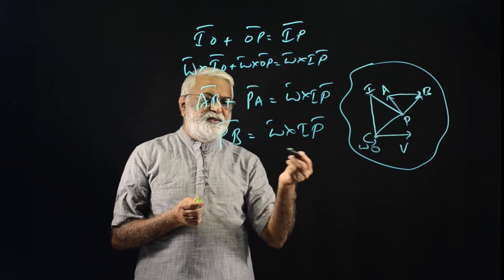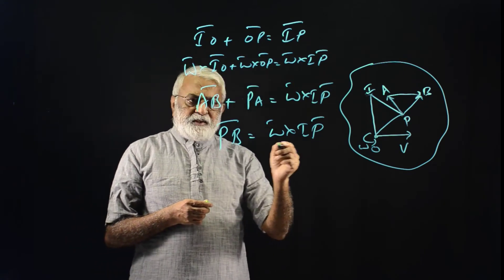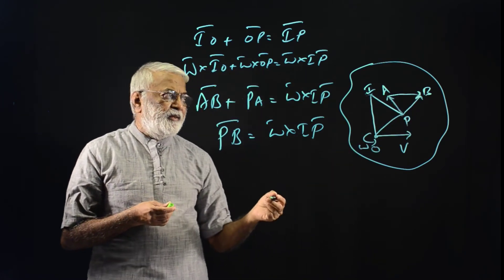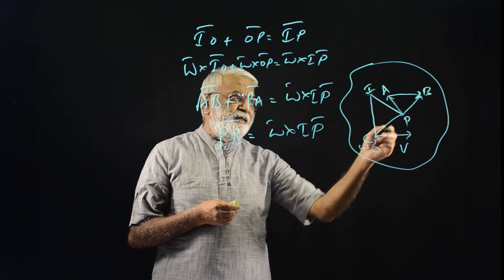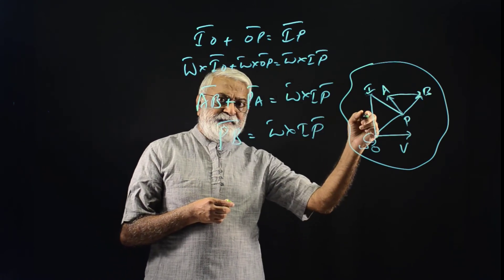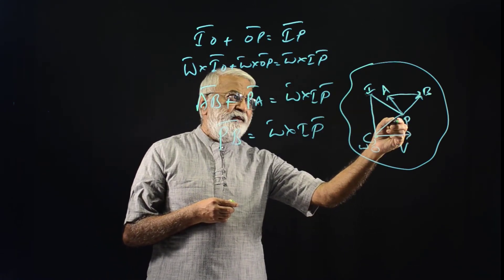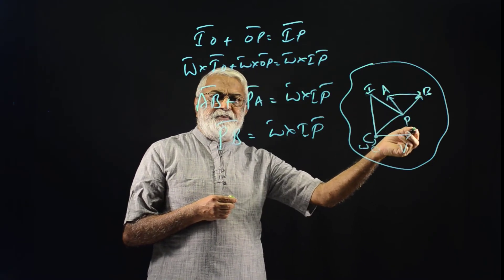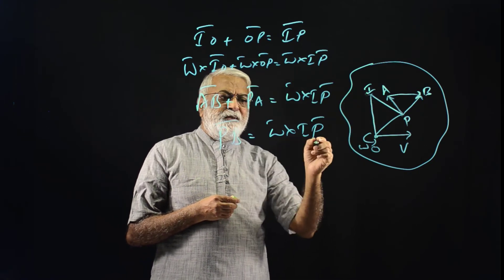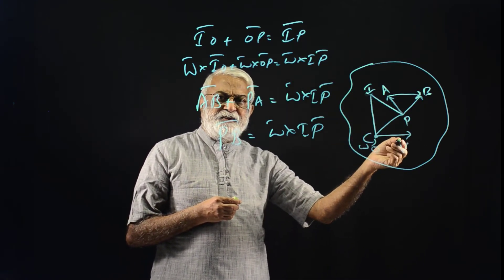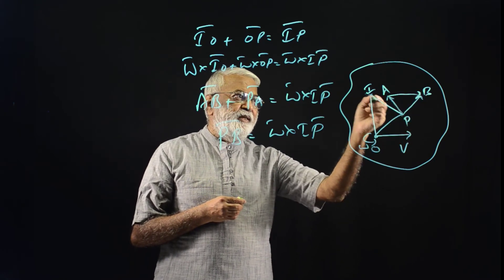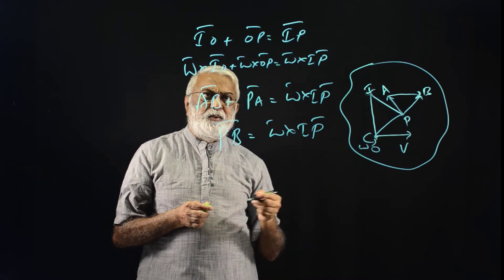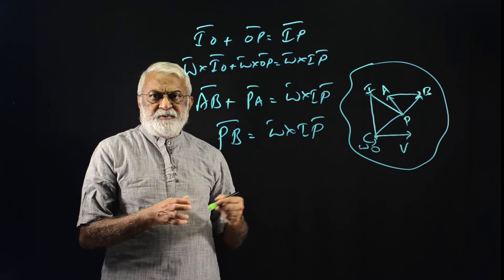For any point on the body, its velocity can be found simply: get the distance from I to P and draw a perpendicular. The direction will be perpendicular to IP, and the magnitude will be Omega times IP. Since Omega is perpendicular to the plane, Omega bar cross IP bar equals Omega·IP in magnitude. So, Omega about I is the same as Omega about O.